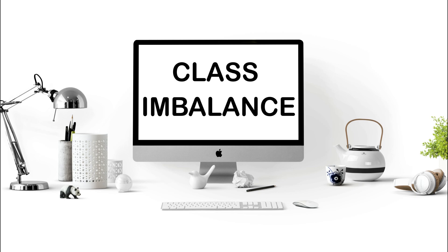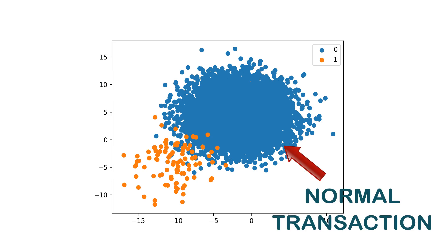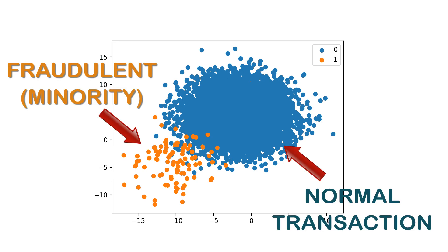Class imbalance is when your dataset has vastly different numbers of examples for different categories. Think fraud detection — you might have millions of normal transactions but only dozens of fraudulent ones.